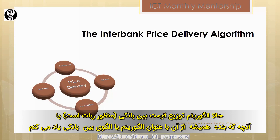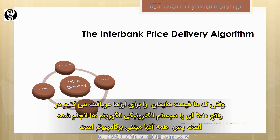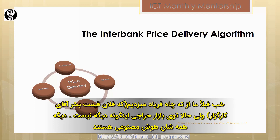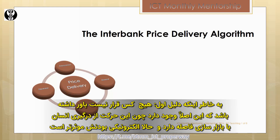The interbank price delivery algorithm — what I always refer to as the ALGO or interbank ALGO — is essentially artificial intelligence. It's a price engine, and when we receive our price for currencies, it's actually 90% done by electronic algorithms — it's all computer based. It used to be open outcry in the pits, but there's no longer an auction market. It's all AI, and it's based on the principles I've been teaching for about seven years now.